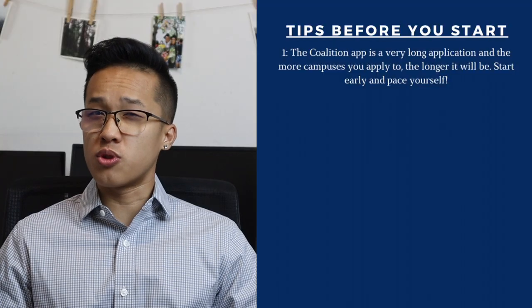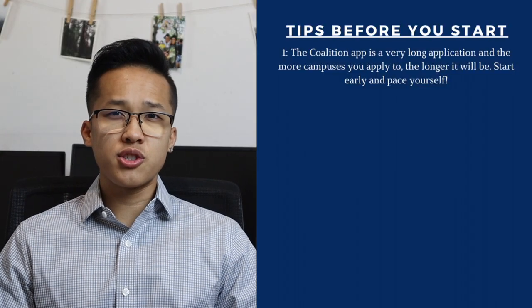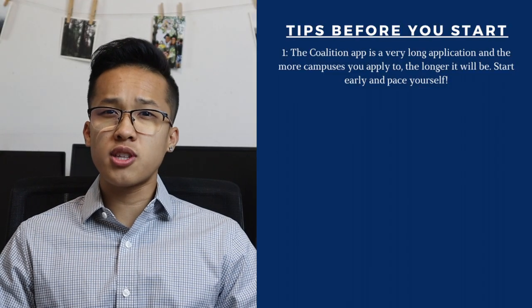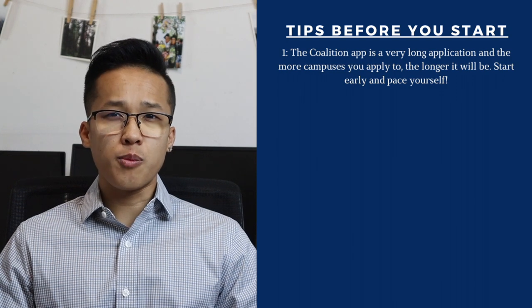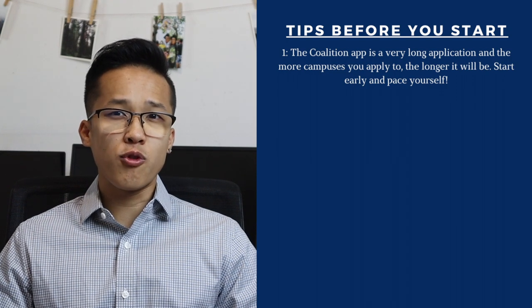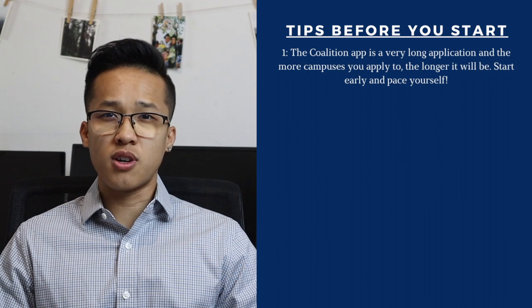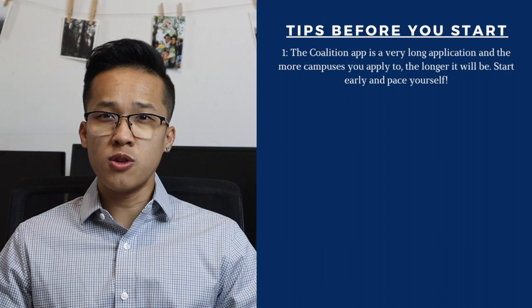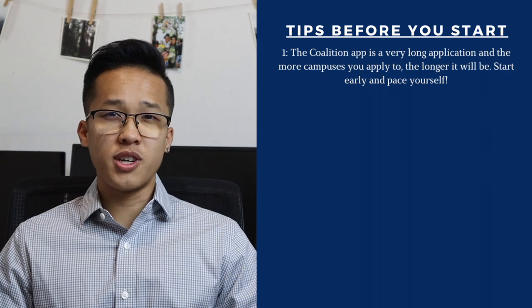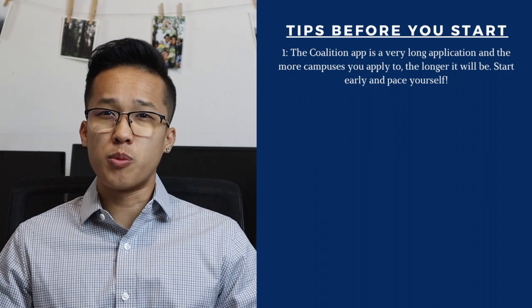As usual with these walkthrough videos I do like to give you all some tips before we start. The very first tip is just to remember that the Coalition application is super long. Similar to the Common application, the more colleges that you apply to, the longer the entire process is going to be. So for students that are applying to two, three, four, five, or maybe even six private schools, just make sure to pace yourselves well. Don't try to do everything all in one day because it can be very overwhelming.